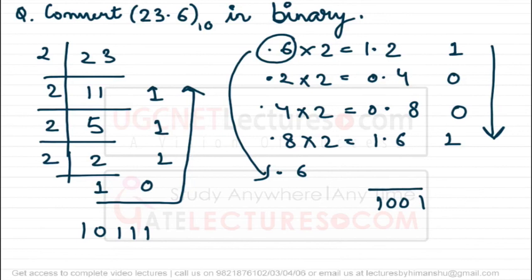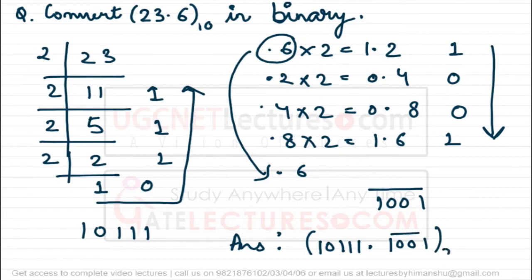You must have learned about the repeating bar notation in class 9th and 10th basics — the same logic applies here. So we write the fractional part as 0.1001 bar, meaning 1001 repeats. The final answer for 23.6 in binary is 10111.1001 bar.